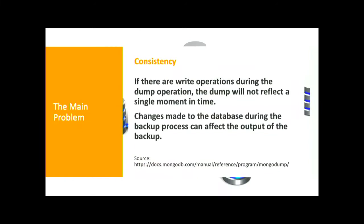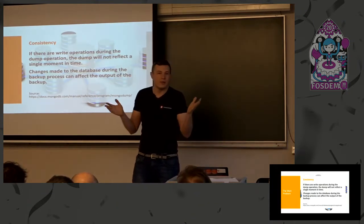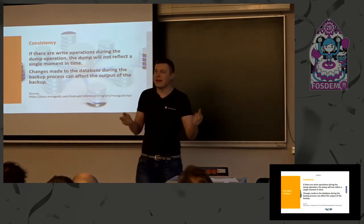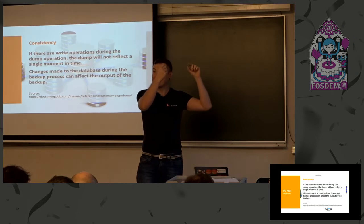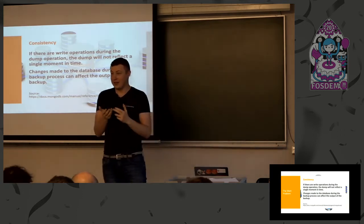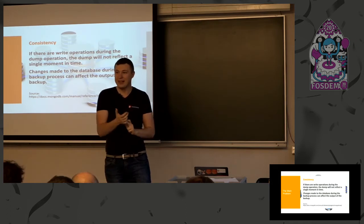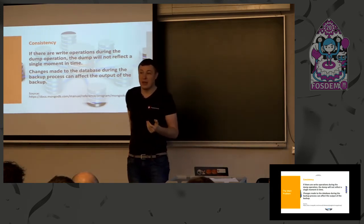MongoDump, the regular utility for MongoDB backups, does backups of collections sequentially, document after document. This can take a while — 10 or 20 minutes if you have plenty of data. If your application changes a document at the beginning of the collection and at the end during backup, you will get a backup with an old document at the beginning and a changed document at the end. So you don't have consistency by default in MongoDB backups.